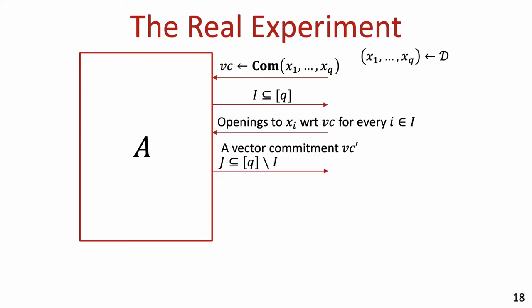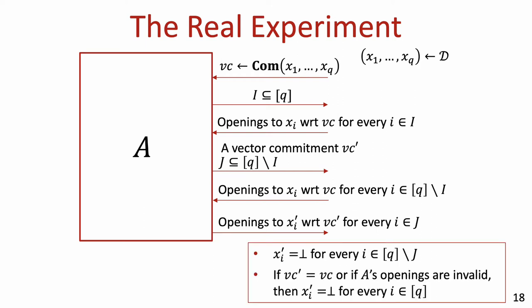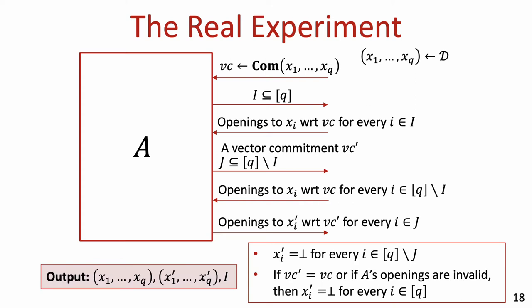The adversary then outputs a vector commitment vc' and specifies a subset J, which specifies the locations the adversary will later open with respect to vc'. Finally, the adversary receives all remaining local openings with respect to the vector commitment it received, and replies with local openings with respect to vc' for all indices in subset J. We denote each value opened by the adversary as xi', where xi' is simply ⊥ if index i is not in subset J. Moreover, if the adversary simply copies the vector commitment it received, or if any of its openings is invalid, then we replace all xi' with ⊥. The output of the experiment is the vector x1 to xq, the vector x1' to xq' of values opened by the adversary, and the subset I chosen by the adversary.